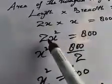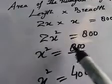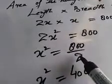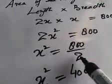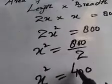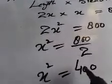Two coefficient hai is ko yahan le ke aayenge right side mein to yeh divide ho jayega. 800 ko 2 se divide karenge to 400 aa jayega, so x² is equal to 400.